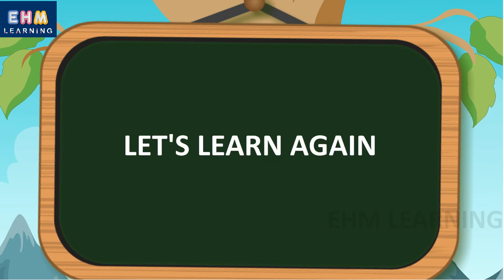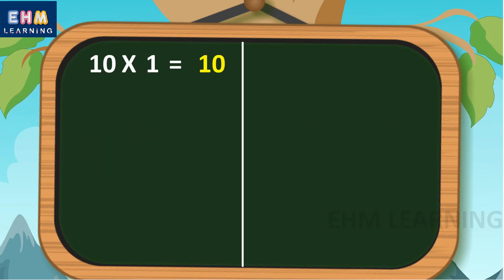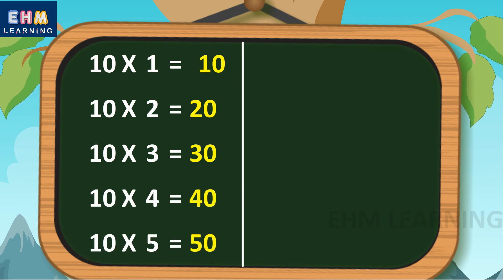Let's learn again. 10 1s are 10, 10 2s are 20, 10 3s are 30, 10 4s are 40, 10 5s are 50, 10 6s are 60.